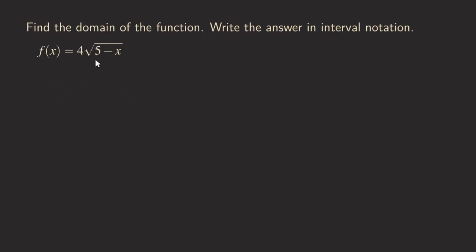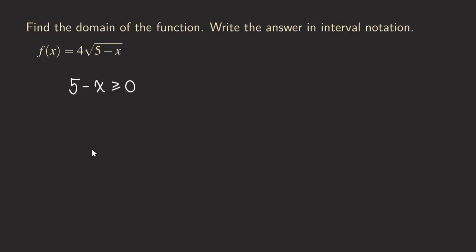Now let's look at the next example. Coming back to a square root function, this time we have some extra stuff — there is a 4 outside the square root of 5 minus x. You may ask: does the 4 affect how we find the domain? That 4 is a constant being multiplied to the radical function, so we can actually ignore it. All we need to do is take 5 minus x and set it greater than or equal to zero, just like the first example. Now we solve this inequality.